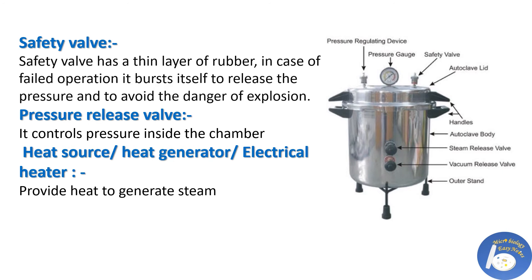The safety valve activates if the autoclave fails or pressure inside increases uncontrollably; it has a thin layer of rubber that bursts to reduce the pressure and avoid the danger of explosion. Next is the pressure release valve — a whistle present on the lid, similar to a pressure cooker, which controls pressure by releasing a certain amount of vapor. Next is the heat source, either an electrical or gas heater underneath; in modern autoclaves, an inbuilt electric heat generator is present, always submerged in water.